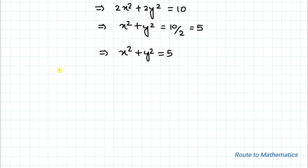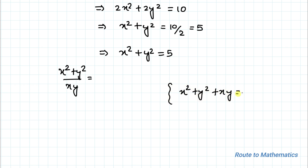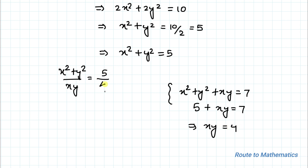So x² + y² = 5. We are asked to find (x² + y²) divided by xy. We already found x² + y² = 5. Now we need to find xy. From equation 2, x² + y² + xy = 7. Substituting x² + y² = 5, we get 5 + xy = 7, which gives xy = 4. So the final answer is 5/4.